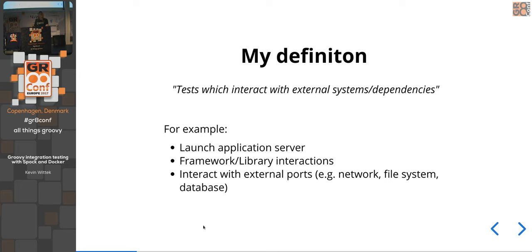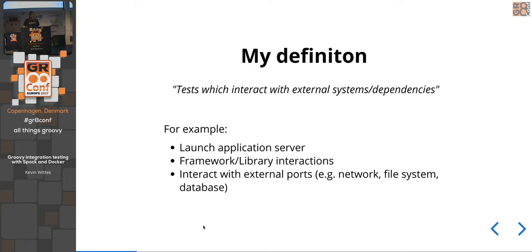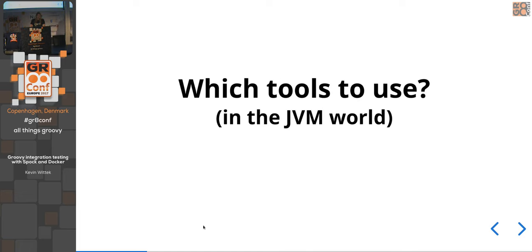My concrete definition of an integration test is: a test which interacts with external systems or dependencies. That includes launching an application server — like a Spring Boot or Grails integration test that launches the application server and framework context. It also includes framework or library interactions, because you're testing the integration between your code and the framework. And of course the classic example: tests which interact with external ports — thinking in terms of hexagonal architecture — meaning code that interacts with the network, file system, or database.